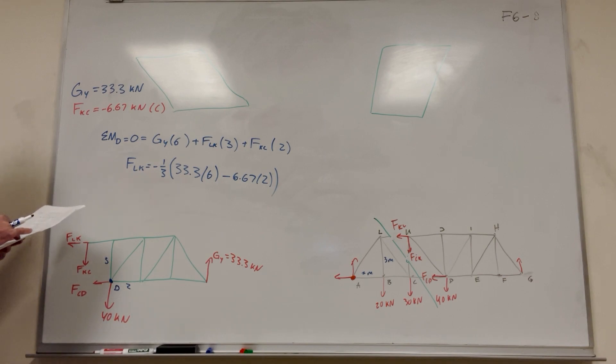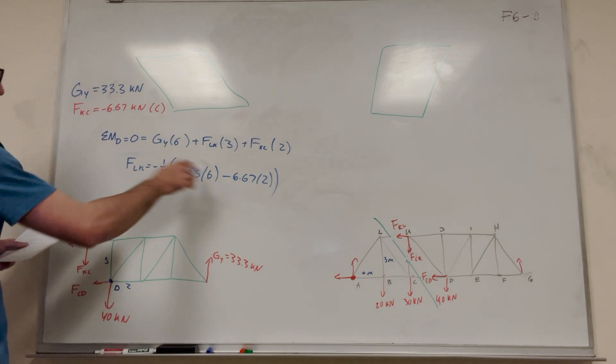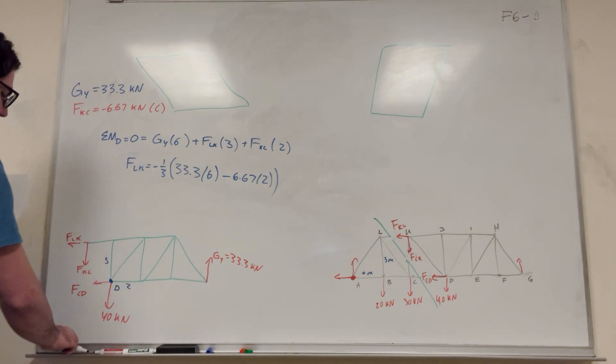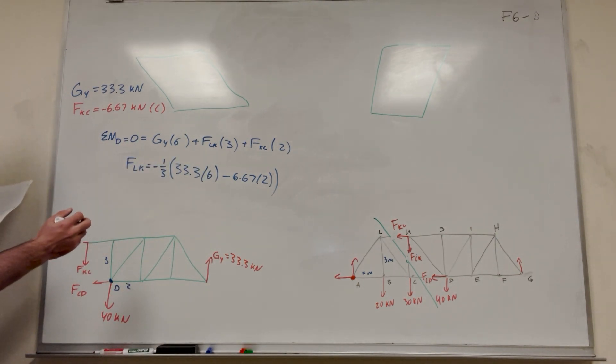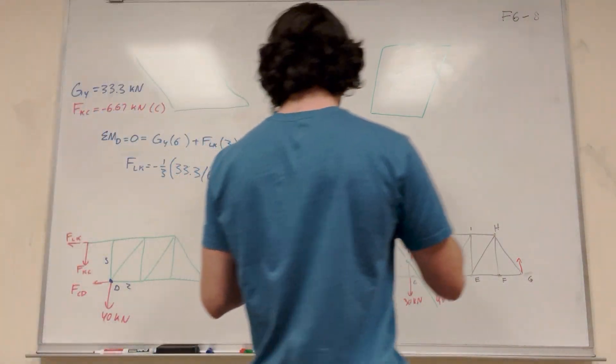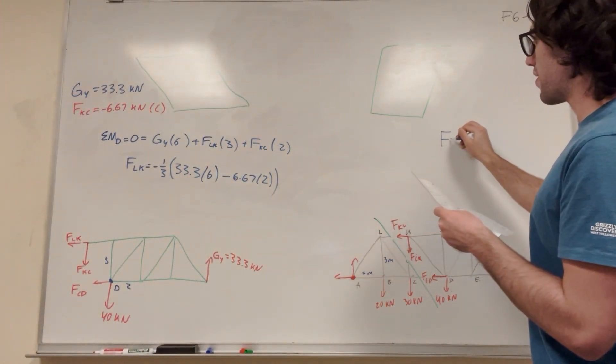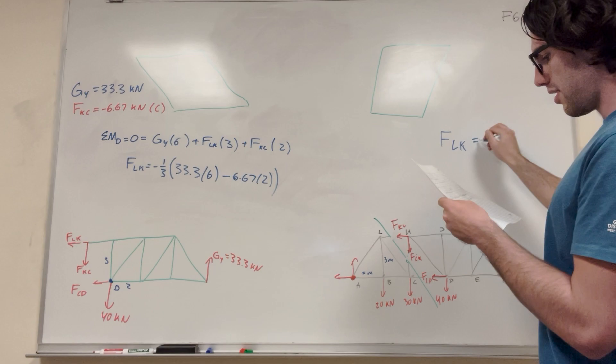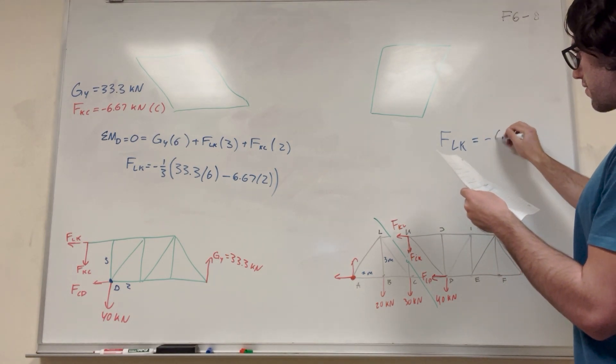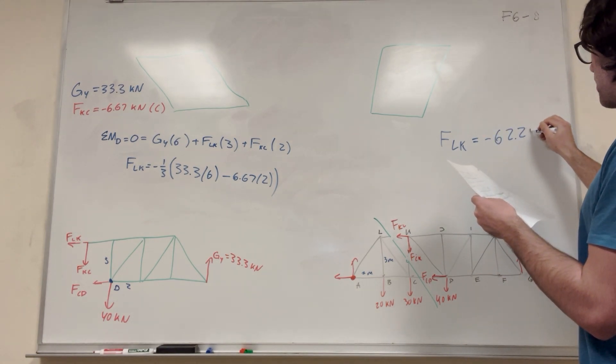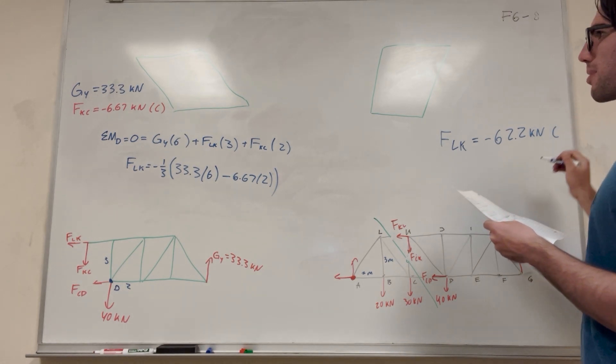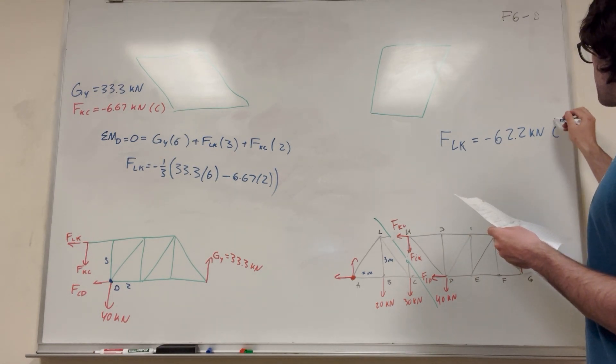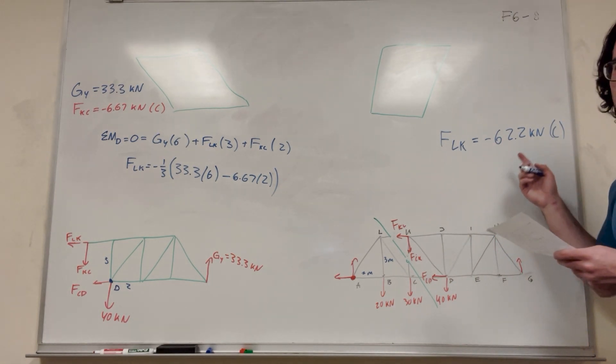So I have 6 minus 6.67 times 2. Cool. So I think that's the right equation. I'm just double checking. Yeah, so these negatives are going to cancel. It's going to be whatever, you know? So then you get, where can I write this? I'm going to write it over here. You get that FLK is equal to negative 62.2 kN, and that's also a compression force. Because we find it's a negative number, so if it's negative, it's compression. Cool.